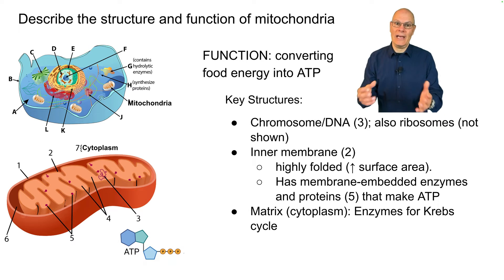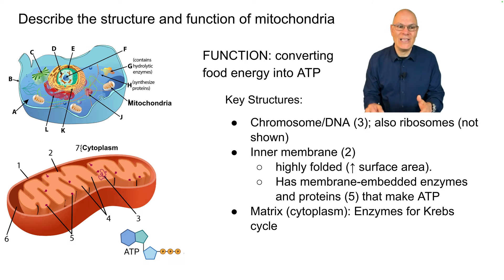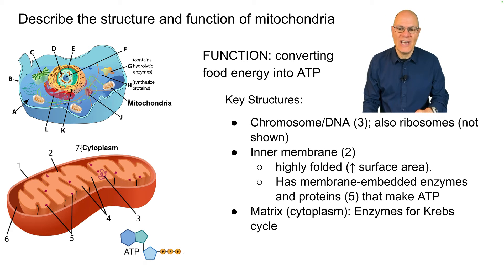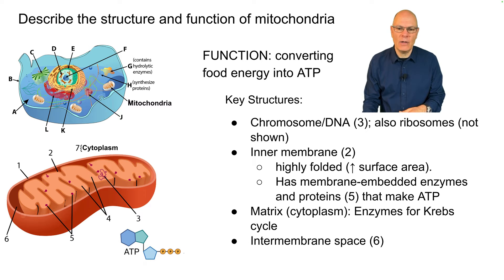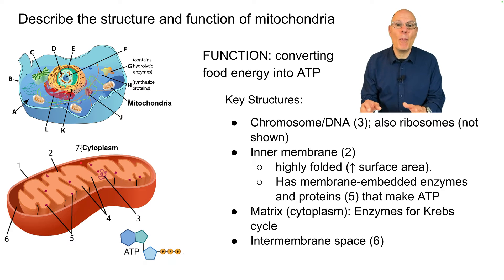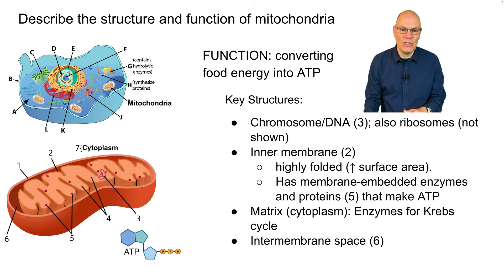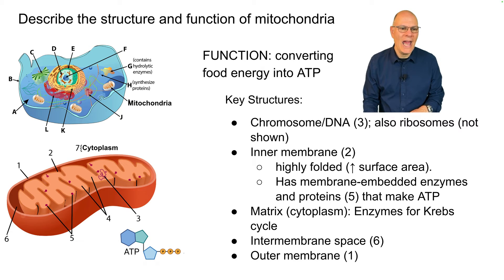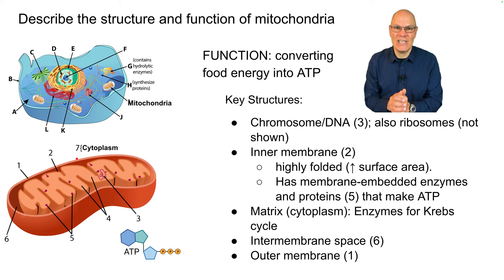The mitochondria, as a former independent cell, has its own cytoplasm called the matrix, which has enzymes for the Krebs cycle and other functions. There's an intermembrane space — an important cellular compartment that enables the mitochondrion to produce ATP — and we'll see how that works in unit three. And there's an outer membrane that is a vestige of endosymbiosis.